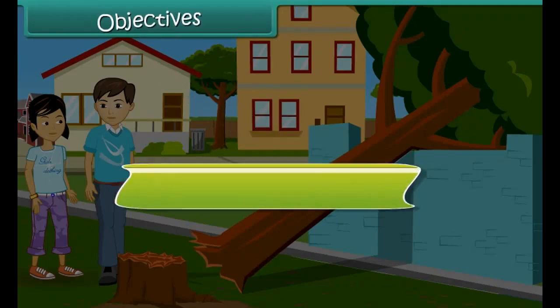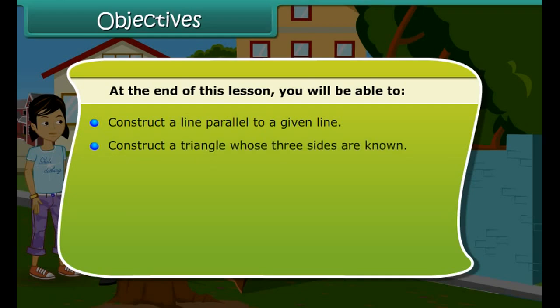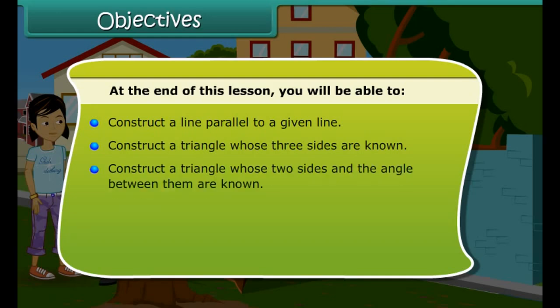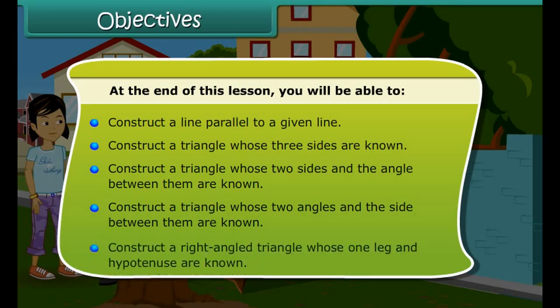Objectives. At the end of this lesson, you will be able to: construct a line parallel to a given line; construct a triangle whose three sides are known; construct a triangle whose two sides and the angle between them are known; construct a triangle whose two angles and the side between them are known; and construct a right-angled triangle whose one leg and hypotenuse are known.